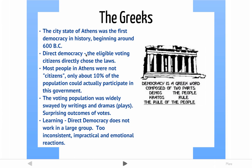In ancient Greece, they had a direct democracy, which means that the people who could vote actually voted directly on the laws. There were no representatives who would vote for the people — the people directly worked on the laws. Most people in Athens were not allowed to participate in this direct democracy. Only about 10% of them could actually participate in the government. That voting population — the 10% who could vote — weren't professional government people. They were just regular people that voted on the laws.